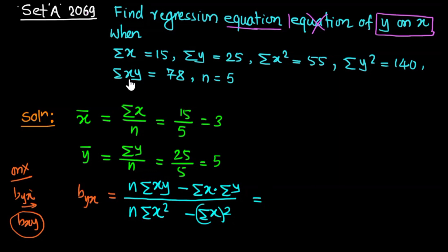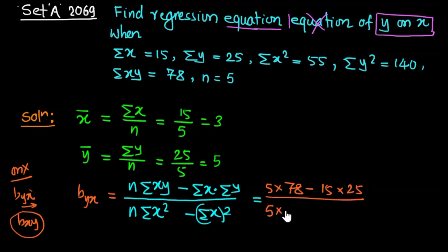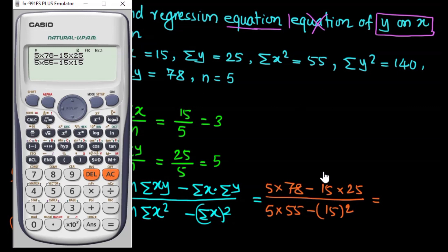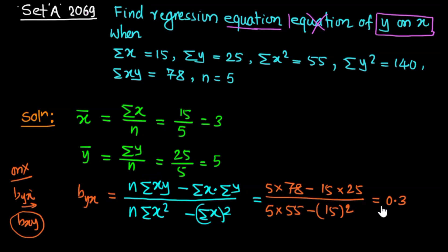Now put the values: n is 5, sigma xy is 78, sigma x is 15, sigma y is 25. Divided by n is 5, sigma x square is 55, sigma x whole square is 15 squared which is 225. So the calculation gives 5 times 78 minus 15 times 25, divided by 5 times 55 minus 225, which equals 15 divided by 50, giving 0.3. So the regression coefficient of y on x, b_yx, is 0.3.